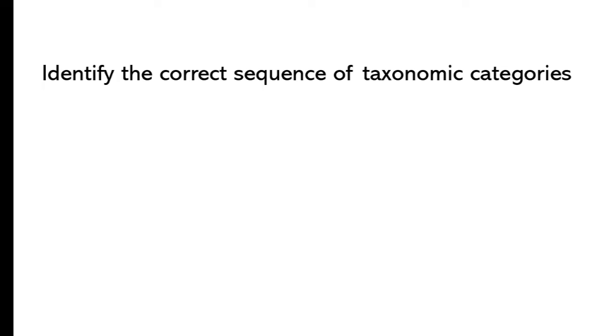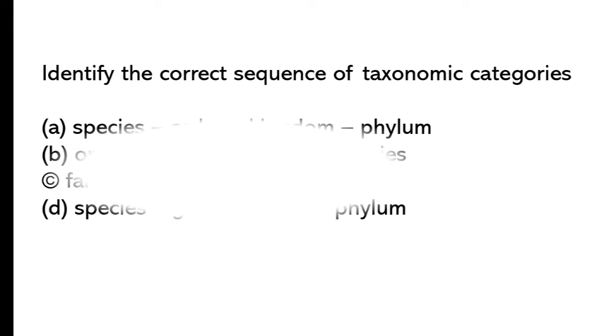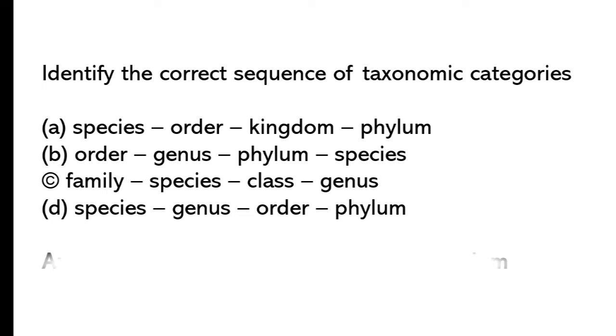Identify the correct sequence of taxonomic categories. So the correct answer is option D: Species, Genus, Order, Phylum.